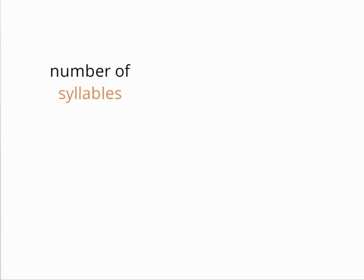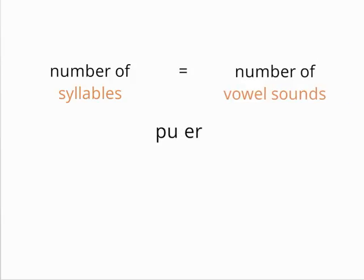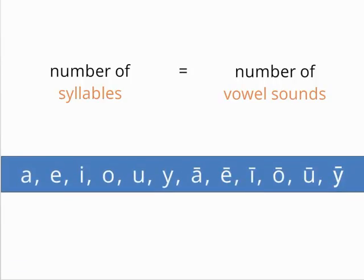In Latin, a word has as many syllables as vowel sounds. For example, the word puer has two syllables. The basic vowel sounds in Latin are displayed on the screen.